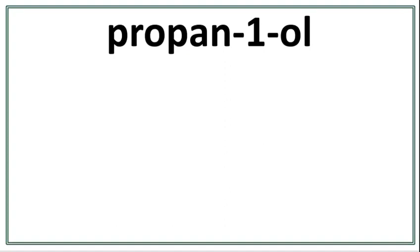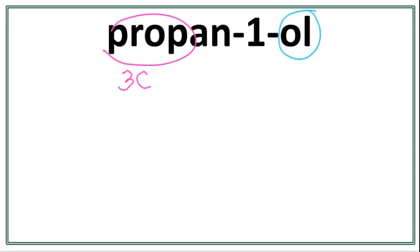Let's draw the structure for propanol or propan-1-ol. 'Prop' tells us that there are three carbons present in the longest carbon chain. 'Ol' tells us that this is an alcohol, meaning we have an OH group.